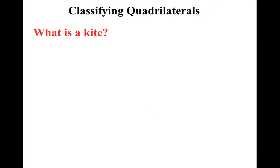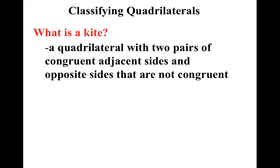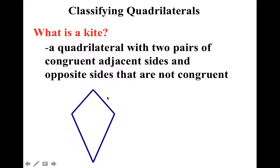What's a kite? Well, a kite looks a lot like a kite. It's a quadrilateral with two pairs of congruent adjacent sides, and opposite sides are not congruent. That's a mouthful, but let's take a look at the picture. Notice this side and this side are congruent, and they are adjacent — they share a vertex, so they're right next to each other. These two are also congruent and adjacent. But opposite sides — this side and this side — are not congruent. And you notice how it does look like a kite that flies up in the sky.